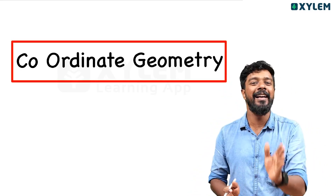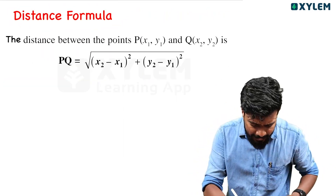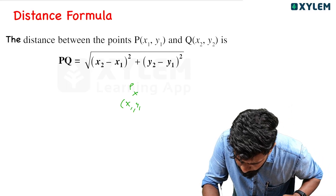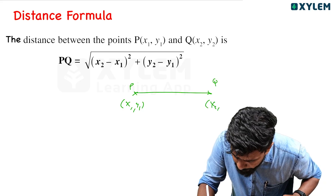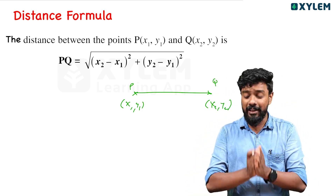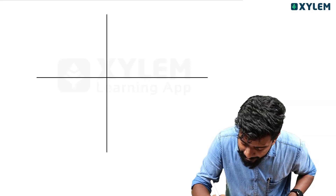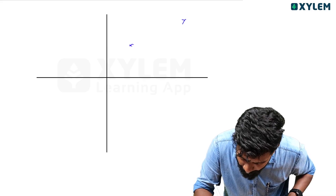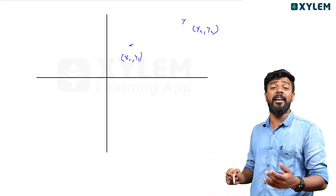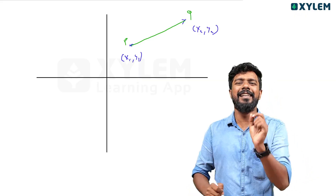I will show you the first concept: the distance formula. We have two points — point P with coordinates x1, y1, and point Q with coordinates x2, y2. This represents x-coordinates and y-coordinates for both points. The distance PQ is what we need to find.